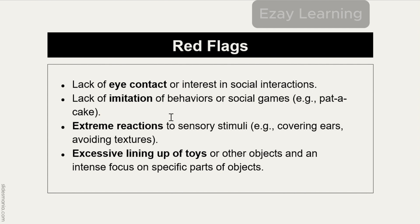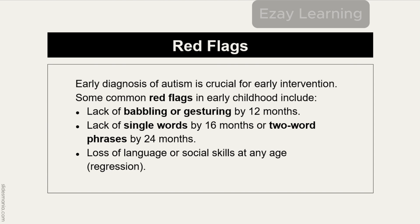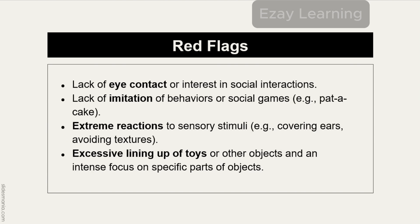Inflexibility and adherence to the same routine, as well as playing with the same toys, are also indicators. Excessive lining up of toys or objects and an intense focus on specific parts of objects could also be a red flag. In summary, the red flags we discussed are: babbling or gesturing, single words, language or social skills, eye contact, imitation, extreme sensory reactions, and excessive lining up of toys at an early age — all potentially indicating the presence of autism.